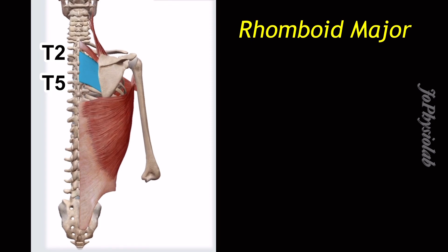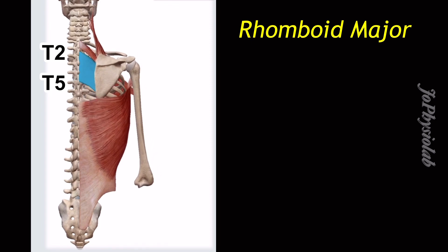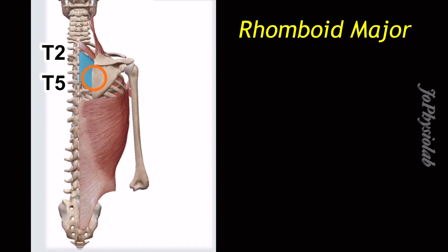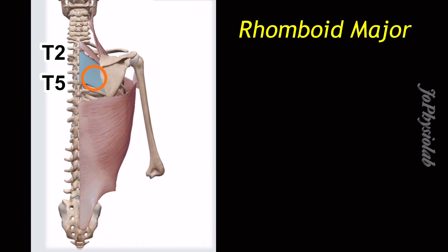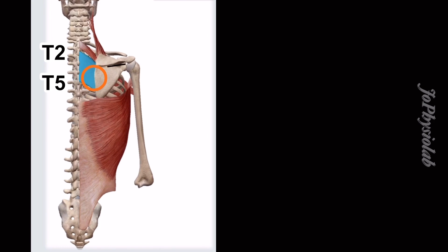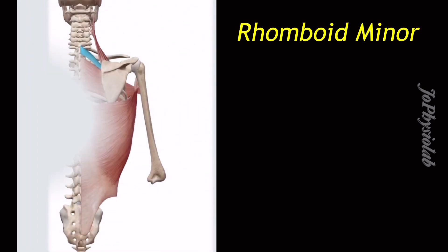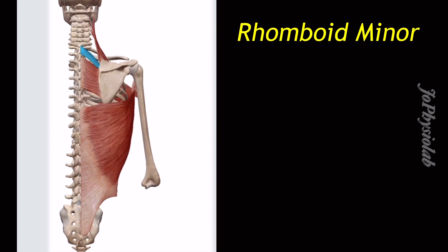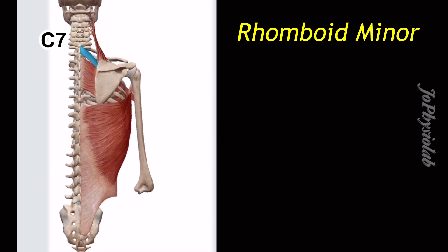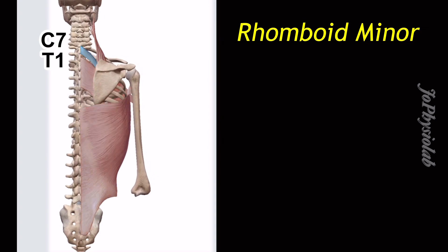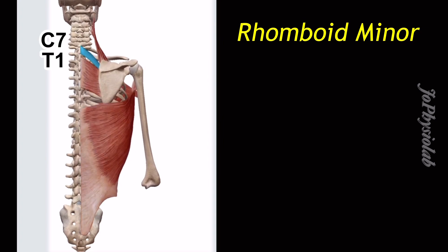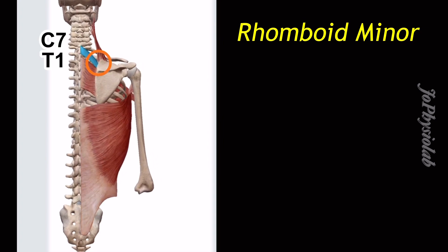The rhomboid major inserts at the medial border of the scapula, below the scapular spine. The rhomboid minor muscle attachment begins with C7 to T1 spinous processes of the vertebrae.